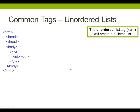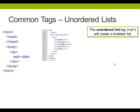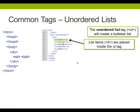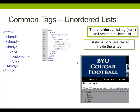Alright, unordered lists. You create an unordered list tag, and inside of it you also need list items. You create a list, and then every item in the list has a list item. LI is a list item, and these list items are placed inside of the unordered list tag. Any list item outside of the unordered list tag is not going to be part of the list, so you have to put them inside.